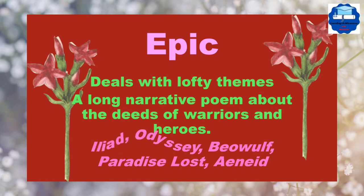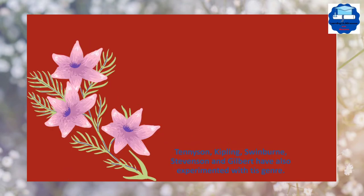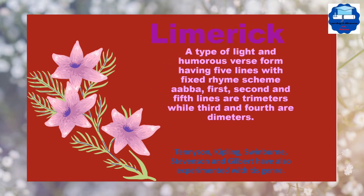Limerick is a type of light and humorous verse form having five lines with fixed rhyme scheme AABBA. The first, second and fifth lines are trimeters while the third and fourth are dimeters. For example, Edward Lear wrote many limericks in his book Nonsense. Other poets like Tennyson, Kipling, Swinburne, Stevenson and Gilbert have also experimented with this genre.